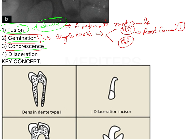Concrescence also involves two separate teeth, but the key distinction is that the teeth are joined with each other through cementum only. Only the cementum is fusing these two teeth, and both tooth structures are present.